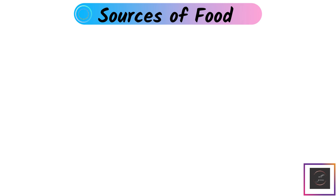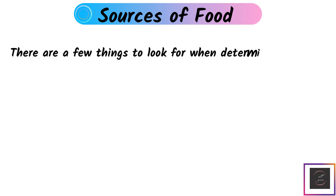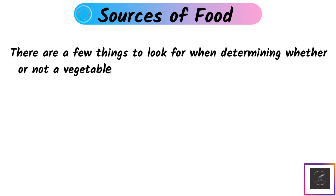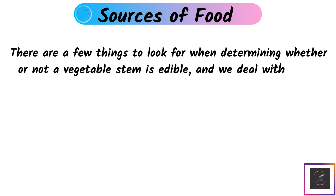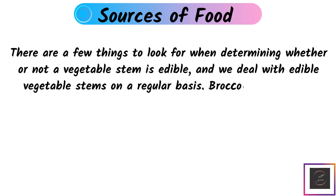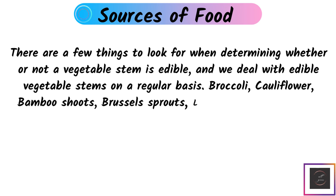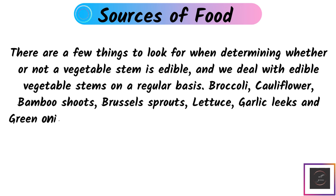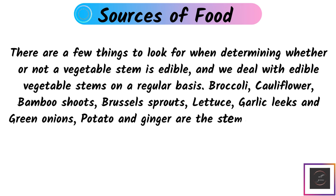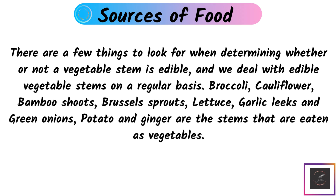Stems: There are few things to look for when determining whether or not a vegetable stem is edible, and we deal with edible vegetable stems on a regular basis. Broccoli, cauliflower, Brussels sprouts, lettuce, garlic leeks, and green onions — potatoes and ginger are also stems that are eaten as vegetables.